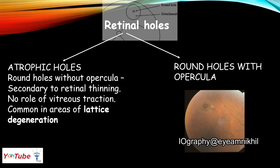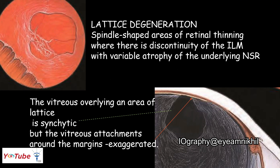Let's first understand what lattices are and why holes are more commonly seen in areas of lattice. Lattice degeneration is a spindle-shaped area of retinal thinning where there is discontinuity of the internal limiting membrane with variable atrophy of the underlying neurosensory retina. It is a weak area that can develop holes, and the vitreous overlying lattice is liquefied while the attachments around its margins are exaggerated — all of which can predispose to retinal detachment.